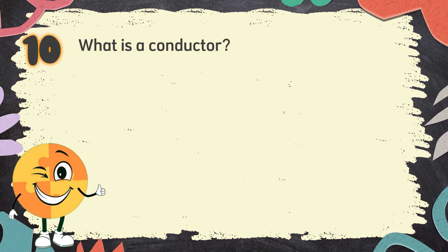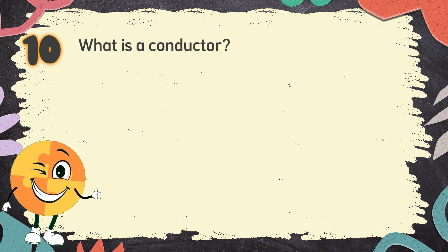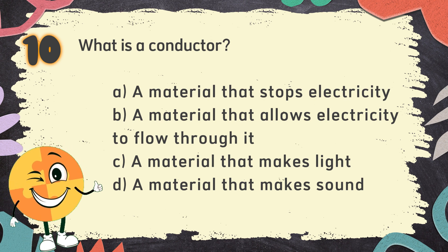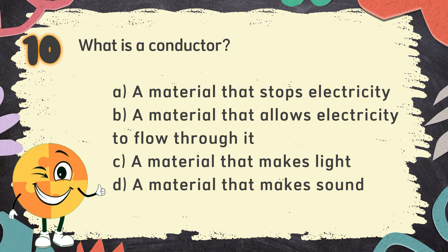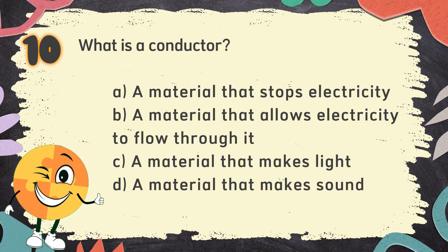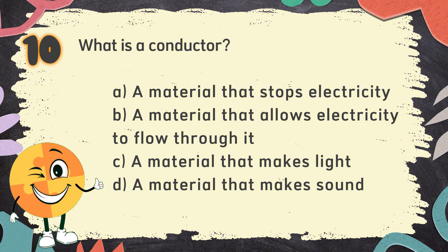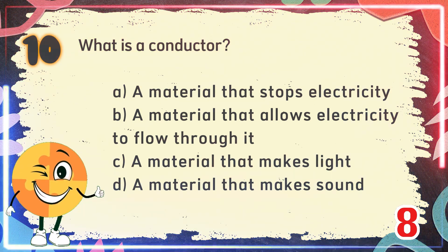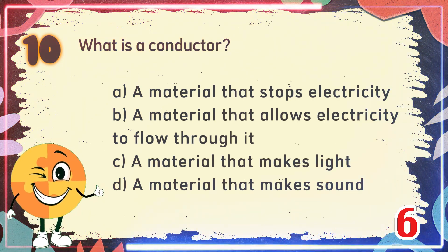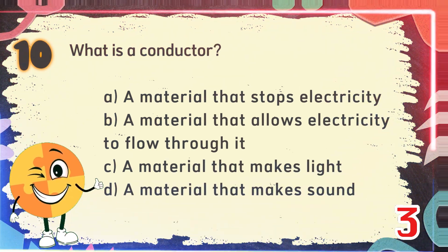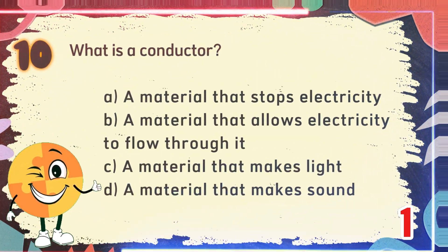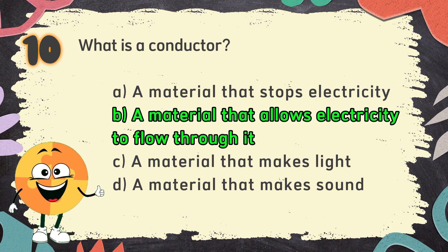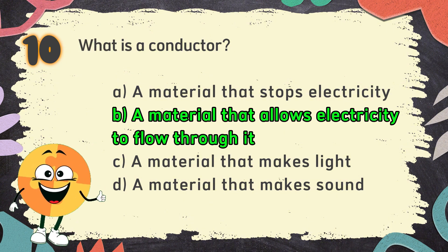Number 10. What is a conductor? The choices are: A. A material that stops electricity, B. A material that allows electricity to flow through it, C. A material that makes light, D. A material that makes sound. The correct answer is B. A material that allows electricity to flow through it.